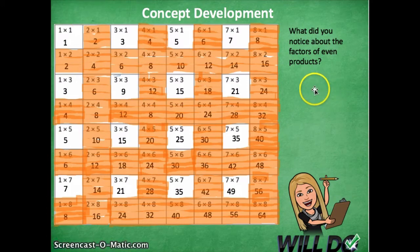I noticed that sometimes when I had an even product, I had an odd number, like the number three, and an even product, or an even factor, like the number two.